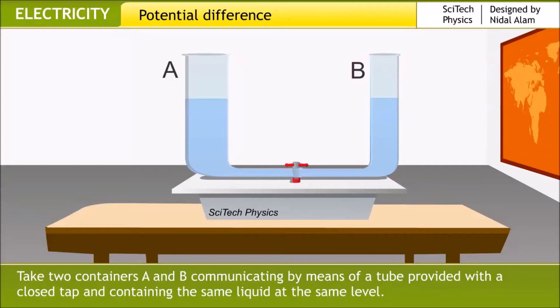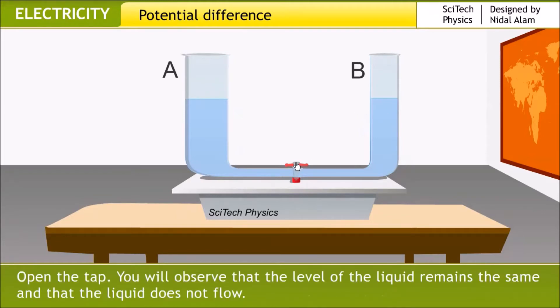Take two containers A and B communicating by means of a tube provided with a closed tap and containing the same liquid at the same level. Open the tap. You will observe that the level of the liquid remains the same and that the liquid does not flow.